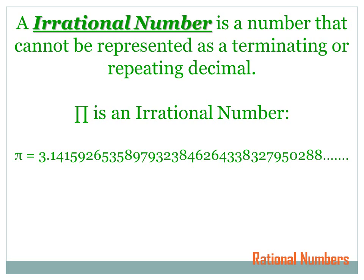To understand what a rational number is, it may be easier to understand what it's not. It's not an irrational number, and there are very few irrational numbers, so most numbers are rational. An irrational number is a number that cannot be represented as either a terminating or repeating decimal. The most famous irrational number is pi. Pi equals 3.141592653 and onward forever. It never terminates, it goes on forever, and it doesn't repeat — it just goes on with different numbers.